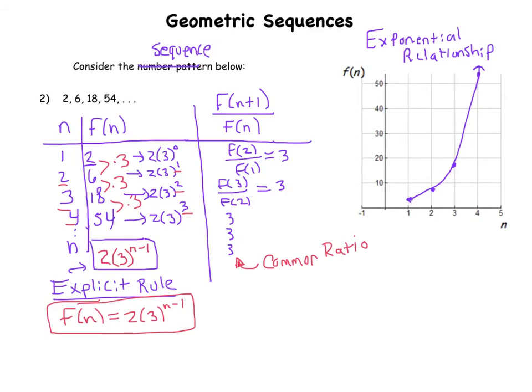Now this column reveals the defining characteristic of a geometric sequence, which is that every term divided by the one before it is this number three, or is a common number. So the recursive rule for this geometric sequence is just that any term divided by the one before it is going to be three.